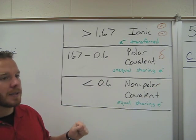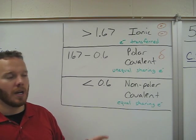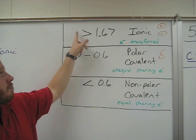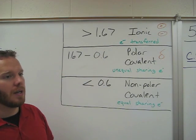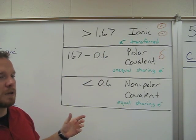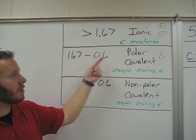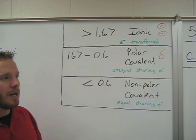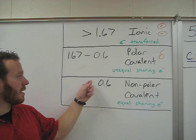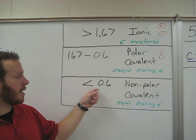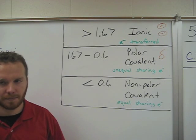How you determine that is by comparing the electronegativity values between the elements. If the difference is bigger than 1.67, it would be an ionic bond. If the difference is somewhere between those two numbers, it's a polar covalent bond. If the difference in electronegativity between elements is less than 0.6, it will be a non-polar covalent bond.